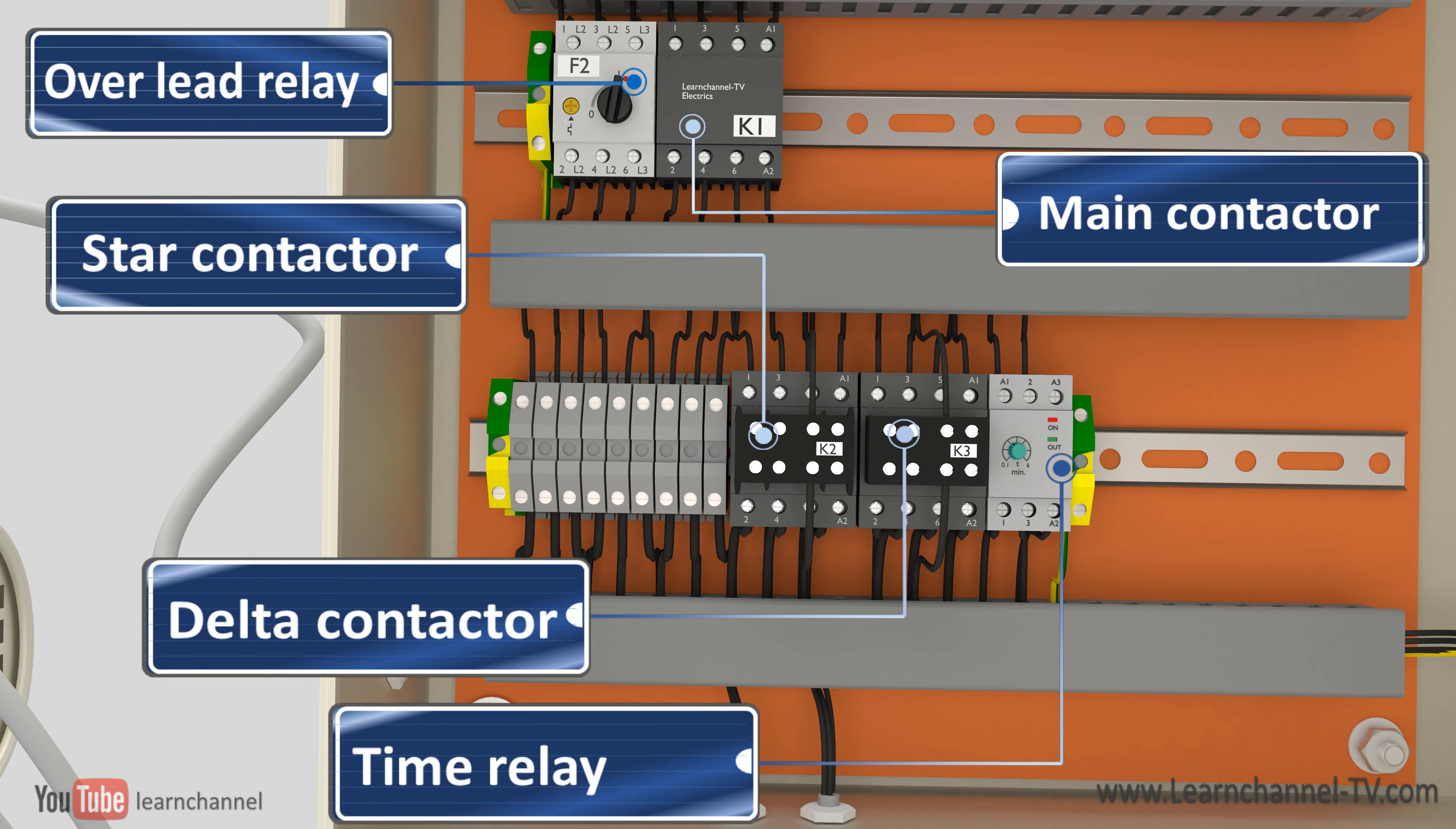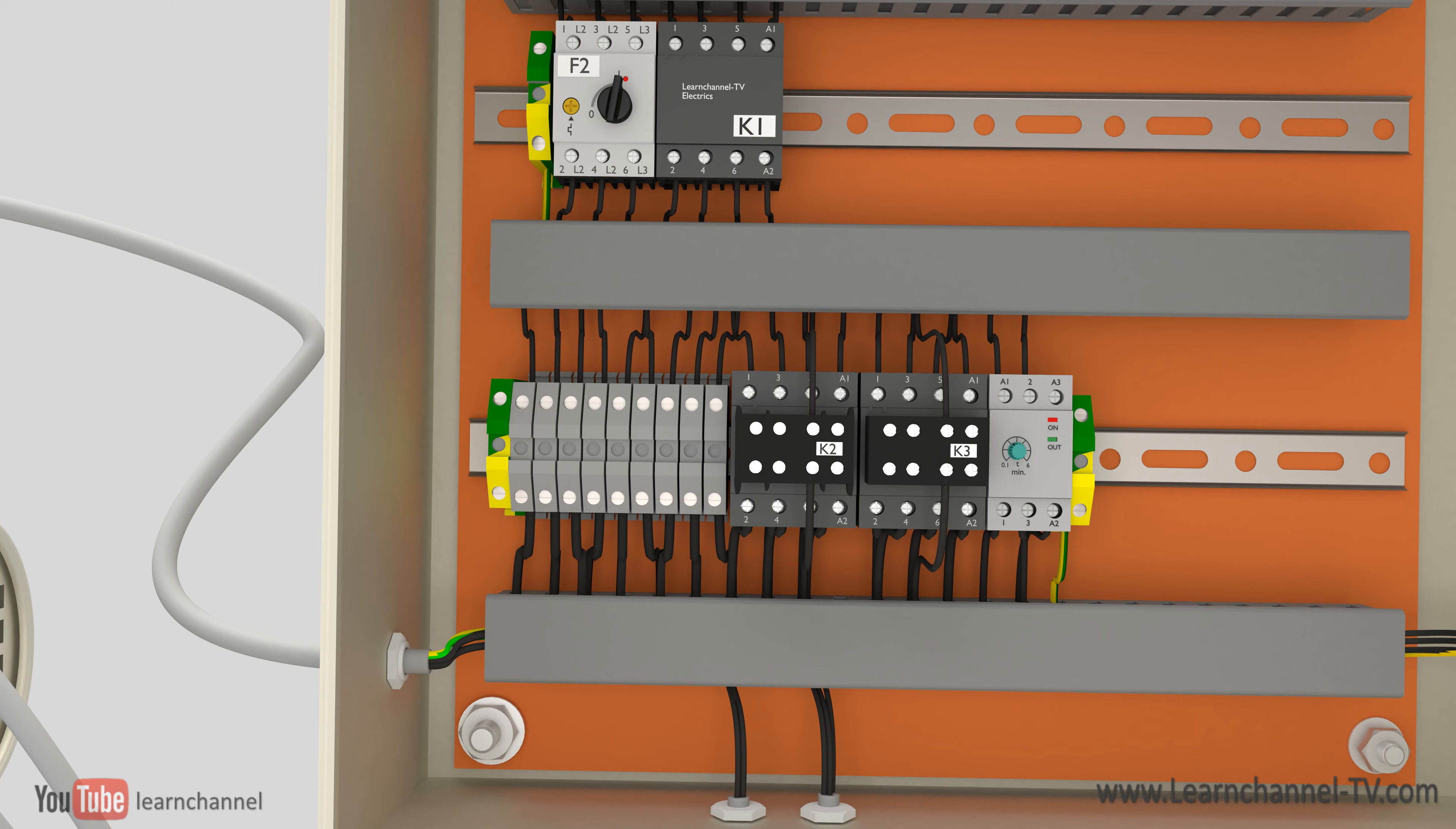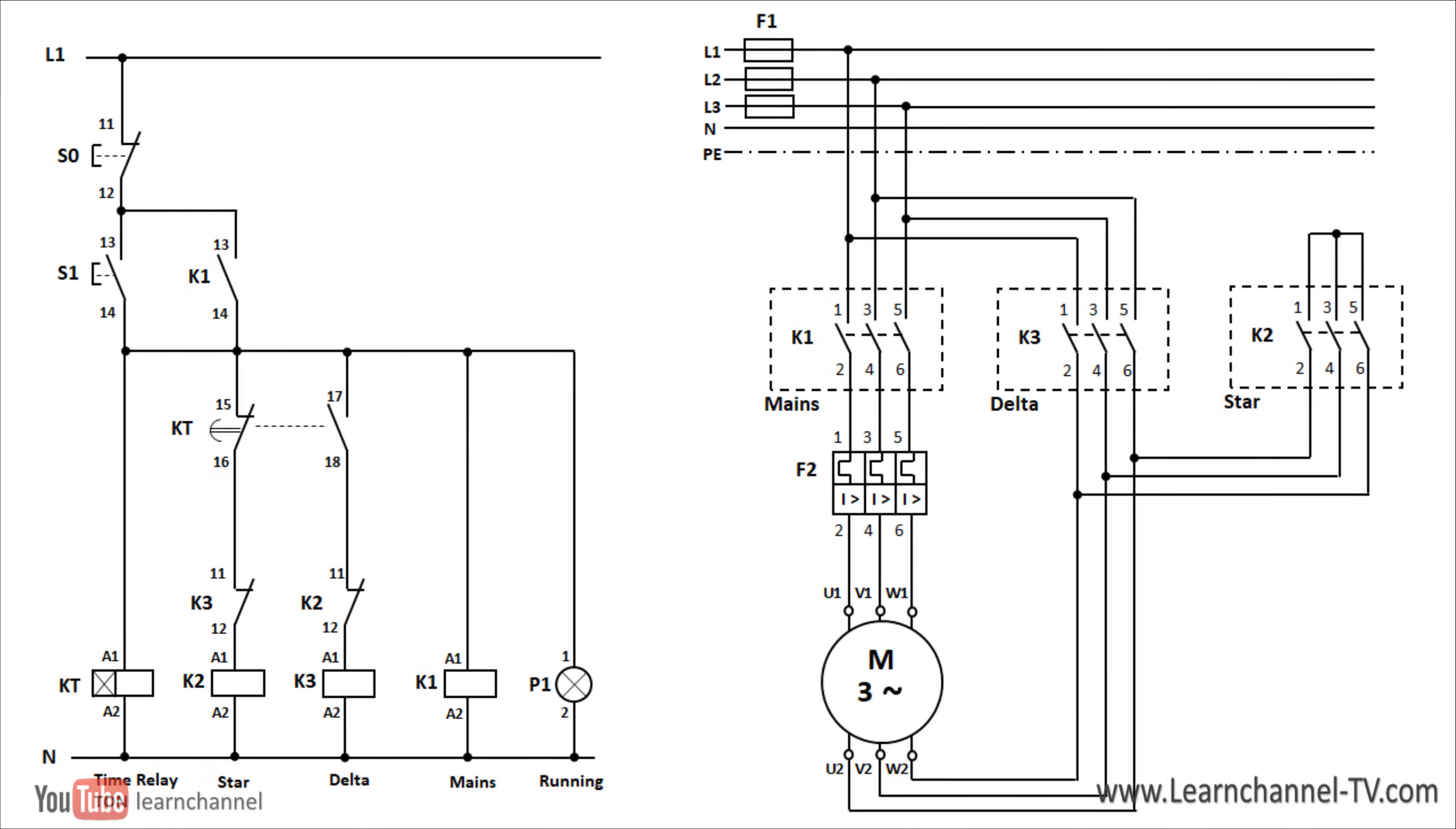Here you see the necessary components. For a better understanding, let's discuss the electric circuit of our control. As soon as the start button is pressed, the main and star contactors are energized. The three-phase motor now starts in star mode. The main contactor holds itself and bypasses the start button.